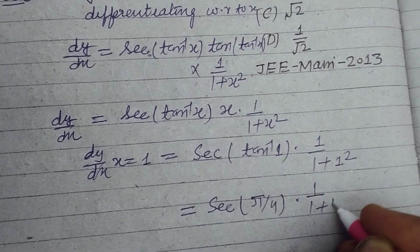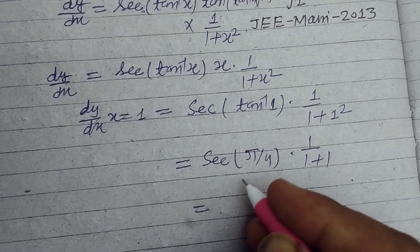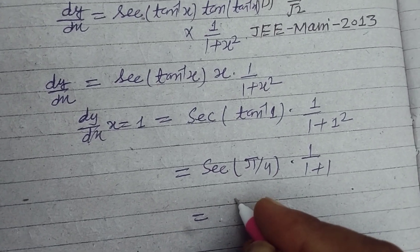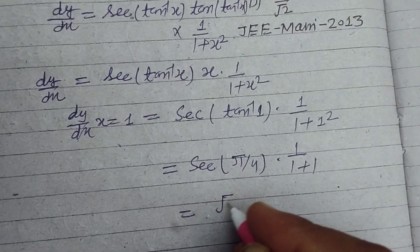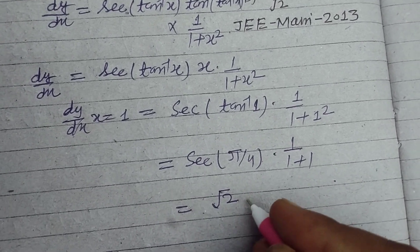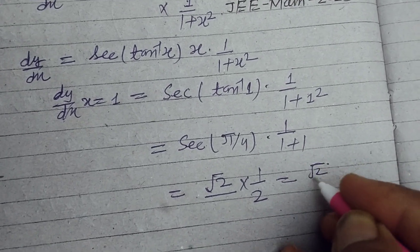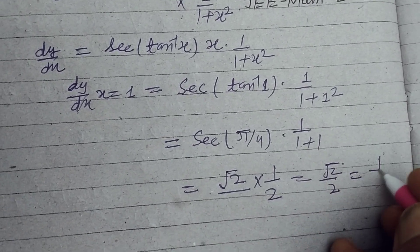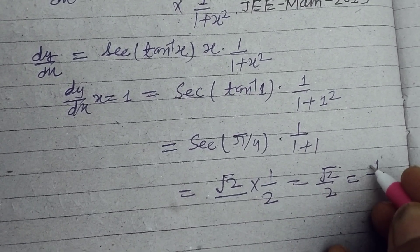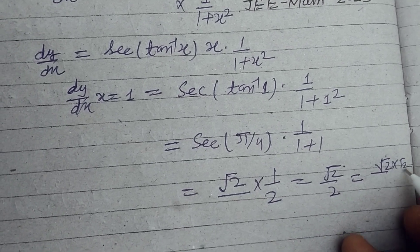And this is 1 plus 1. Sec(π/4) is root 2 into 1 upon 2. So this is root 2 by 2, or on multiplication by root 2 in numerator and denominator...